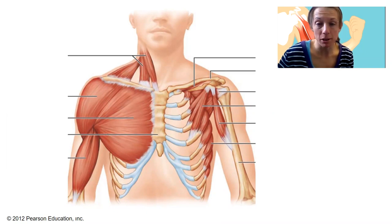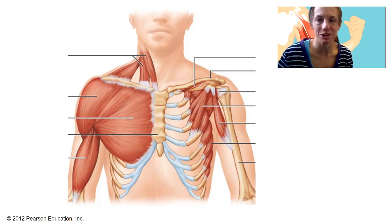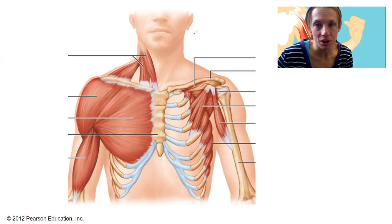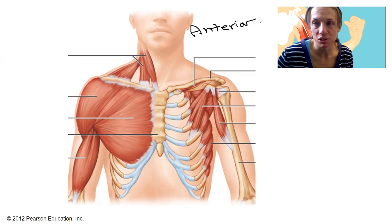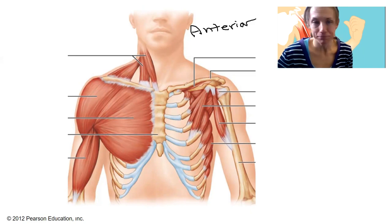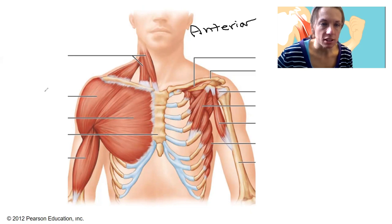What I want to do is start by making sure you can see where you are and how you start knowing what to look for. For example, this view — the first thing you should see is that this is an anterior view. We can see the guy's face, so any muscles on the anterior of your body may be relevant. Let's start with this.